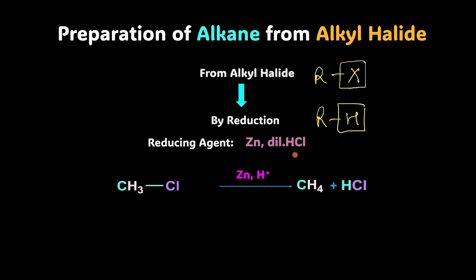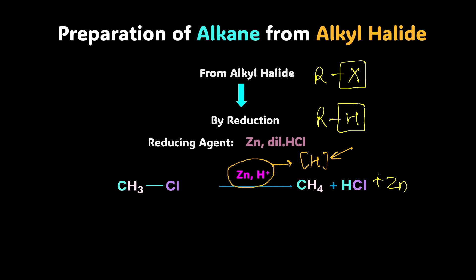So if you take methyl chloride and add to it zinc in the presence of this acid, you get methane — you found out a way to prepare methane! What happens here is zinc reacts with hydrochloric acid to form nascent hydrogen, represented in square brackets like [H]. This is quite reactive hydrogen. It causes reduction, helping us replace the chlorine, and what we get is methane. We also get zinc chloride as a byproduct along with hydrogen chloride.